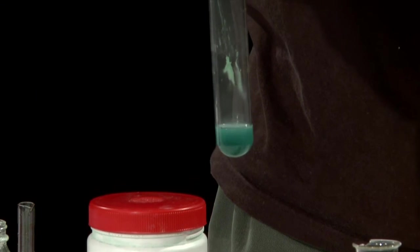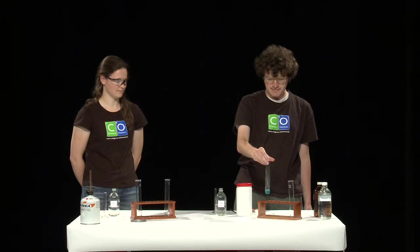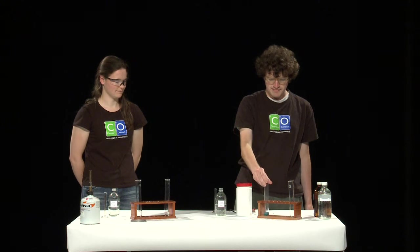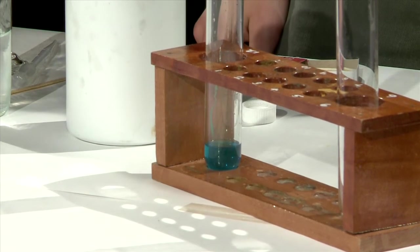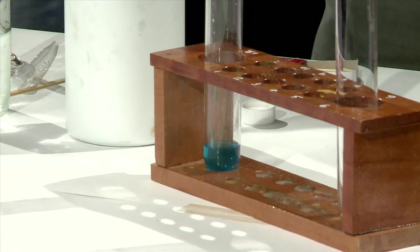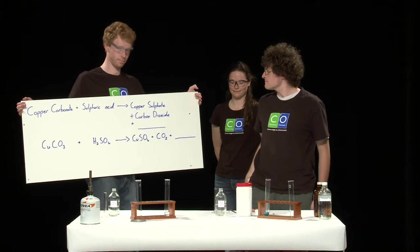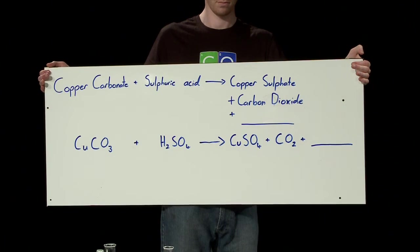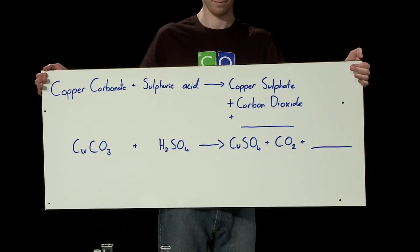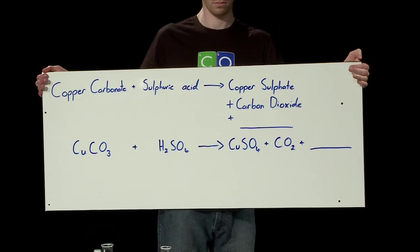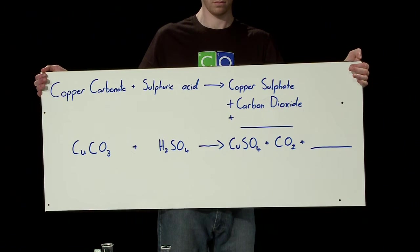The copper carbonate is being dissolved to form a clear blue solution of copper sulfate. This also results in bubbling as carbon dioxide is given off by the reaction as well. There's one more product that's formed by this reaction, and this can be easily identified if we look at the chemical symbols for our reactants. Copper carbonate is CuCO3. Sulfuric acid is H2SO4. Copper sulfate is CuSO4. And carbon dioxide is CO2.